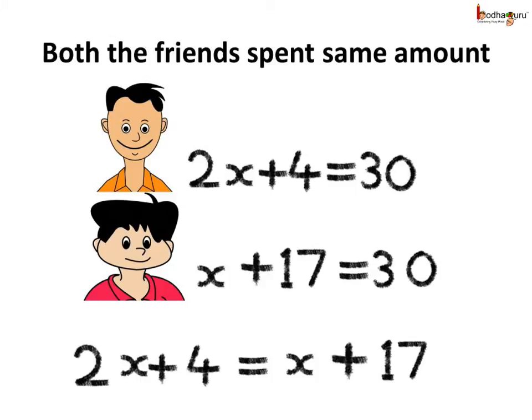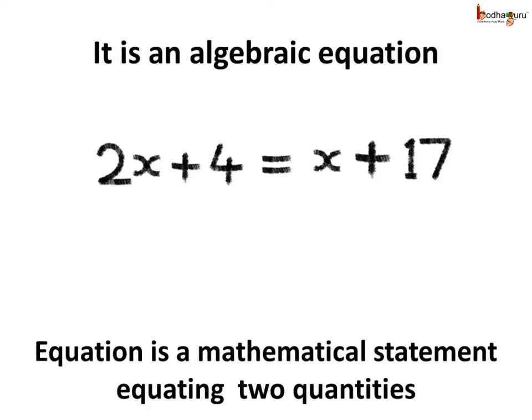Thus, the two algebraic expressions 2x plus 4 and x plus 17 have equal values, which is equal to 30. Hence, we can write 2x plus 4 is equal to x plus 17. You know, 2x plus 4 is equal to x plus 17 is an algebraic equation.